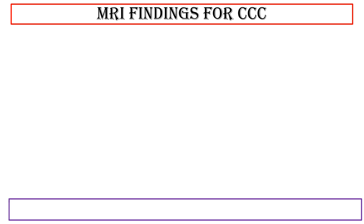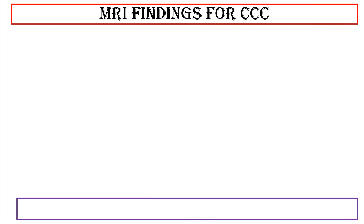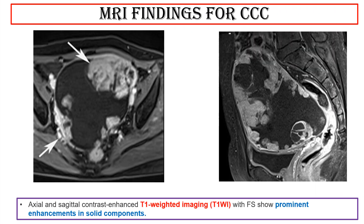MRI findings for clear cell carcinoma: axial and sagittal T2-weighted imaging with fat saturation show an oval unilocular cystic mass with papillary projections — see the arrows. Axial and sagittal contrast-enhanced T1-weighted imaging with fat saturation shows prominent enhancement in solid components.